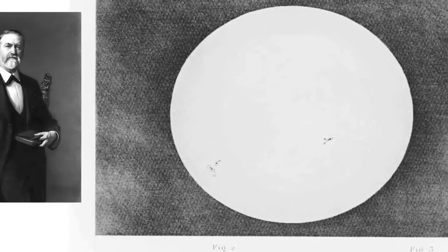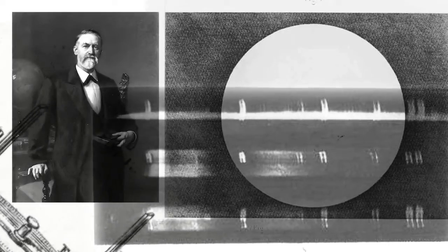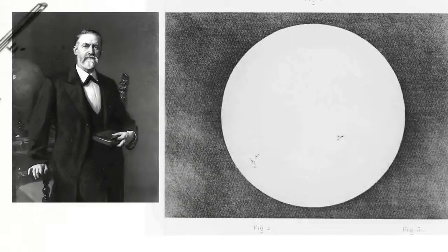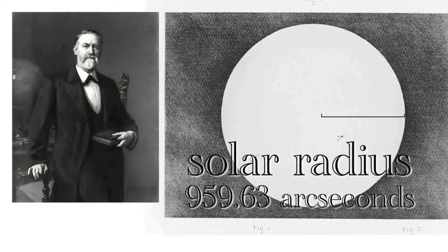In the 19th century, Arthur Hough observed the Sun and compiled measurements. He determined the value for the solar radius of 959.63 arc seconds. It is still the value of reference.